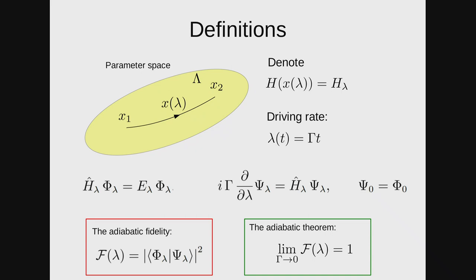The initial condition is that the initial physical state coincides with the instantaneous ground state, and what we are looking at is the adiabatic fidelity — essentially the overlap between the instantaneous ground state and the physical state, squared. If the adiabatic fidelity is close to one, we are happy; if it is very small, we are unhappy. The adiabatic theorem now has a very short statement: the adiabatic fidelity goes to one if the driving rate goes to zero. That's the rigorous statement of this theorem.